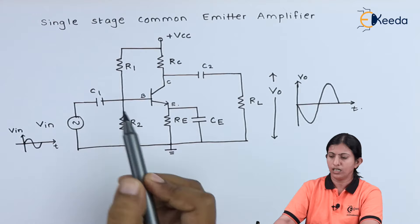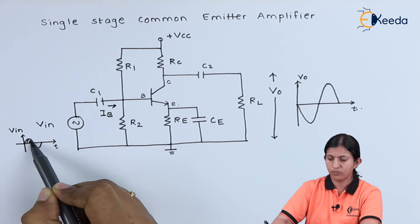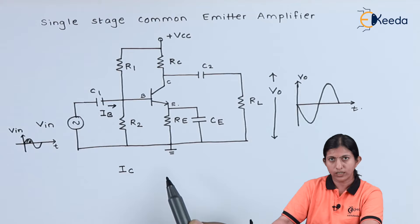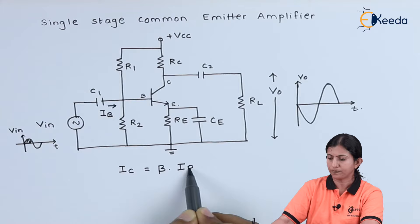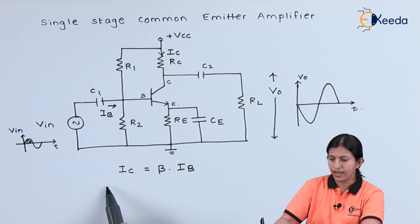When we apply the input signal, the current IB will flow through the transistor. As IB increases in the positive half cycle of the input signal, then IC, that is collector current, also increases because IC is equal to beta times IB, and hence the current flowing through the collector terminal IC also increases.